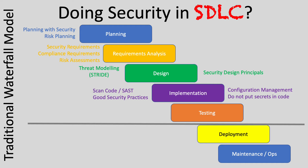In the planning phase, what we're really doing is planning with security — doing risk planning and that kind of good stuff. The planning stage is really to set the agenda moving forward. Then the real first step in the SDLC is the requirements aspect: analyzing the requirements. Here, we want to be at the table with the rest of the software development team to talk about security requirements, compliance requirements, and risk requirements.